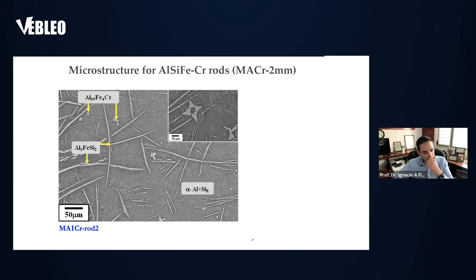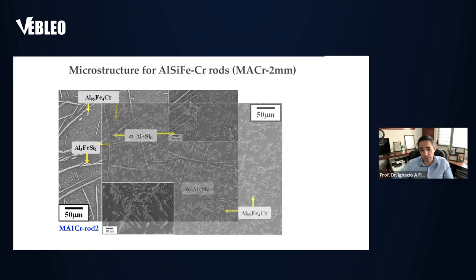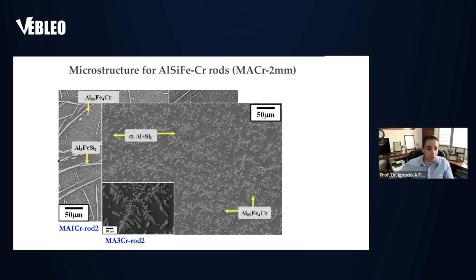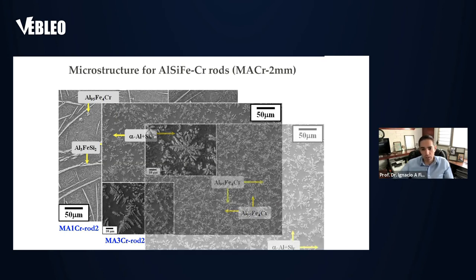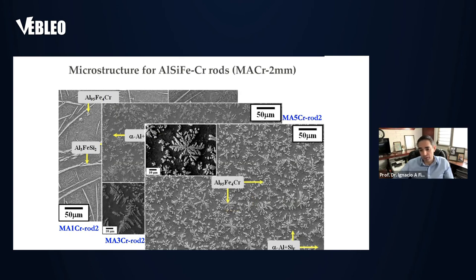This is the 2 mm rod with 1% of chromium. As you can see, we start forming a quite different arrangement from the previous one, and we still have the intermetallic with silicon. However, if we add more chromium, this sharp structure becomes dendritic. We use this to calculate the cooling rate of the system using the DAS model. As we increase the chromium content, we find more phase related to the intermetallic with chromium together with the eutectic, distributed very homogeneously along the microstructure.